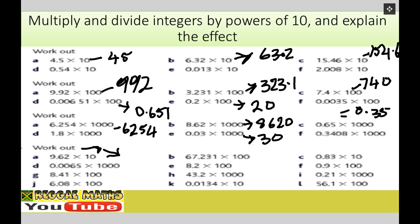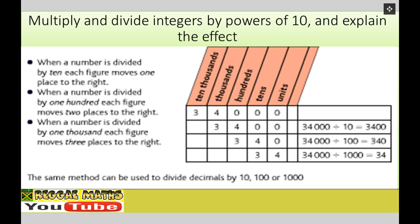Now let's move on to dividing — dividing would be the opposite direction. When a number is divided by 10, each figure moves one place to the right. When a number is divided by 100, each figure moves two places to the right. When a number is divided by 1,000, each figure moves three places to the right.